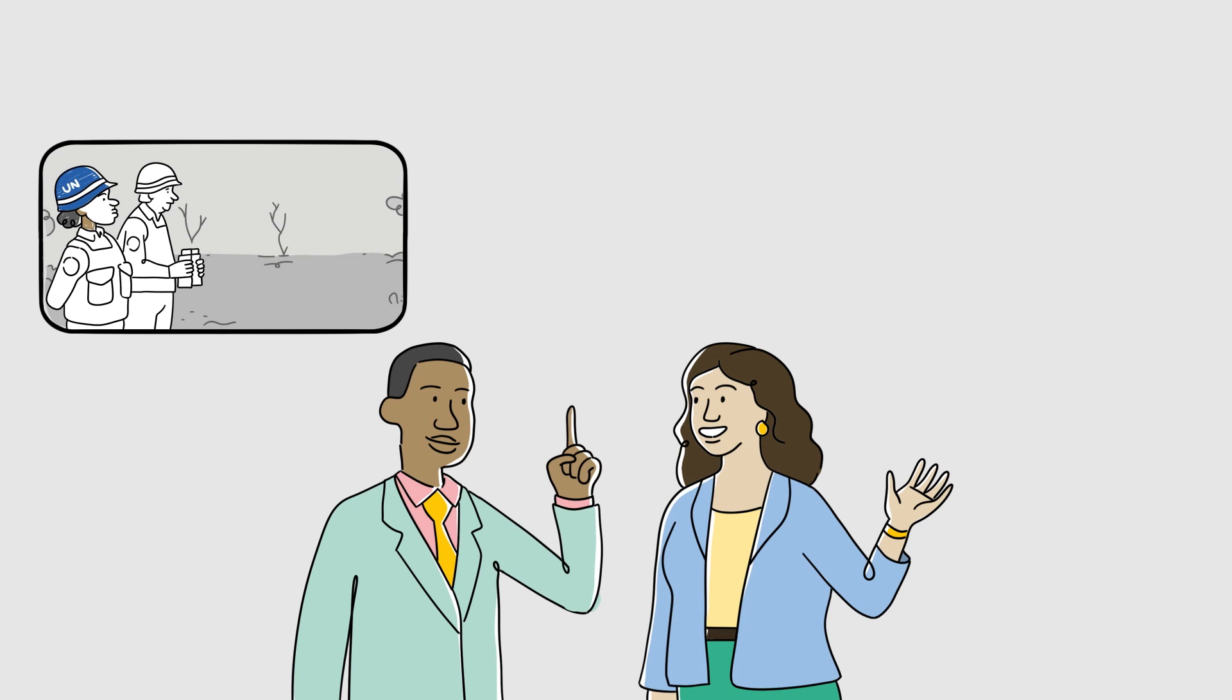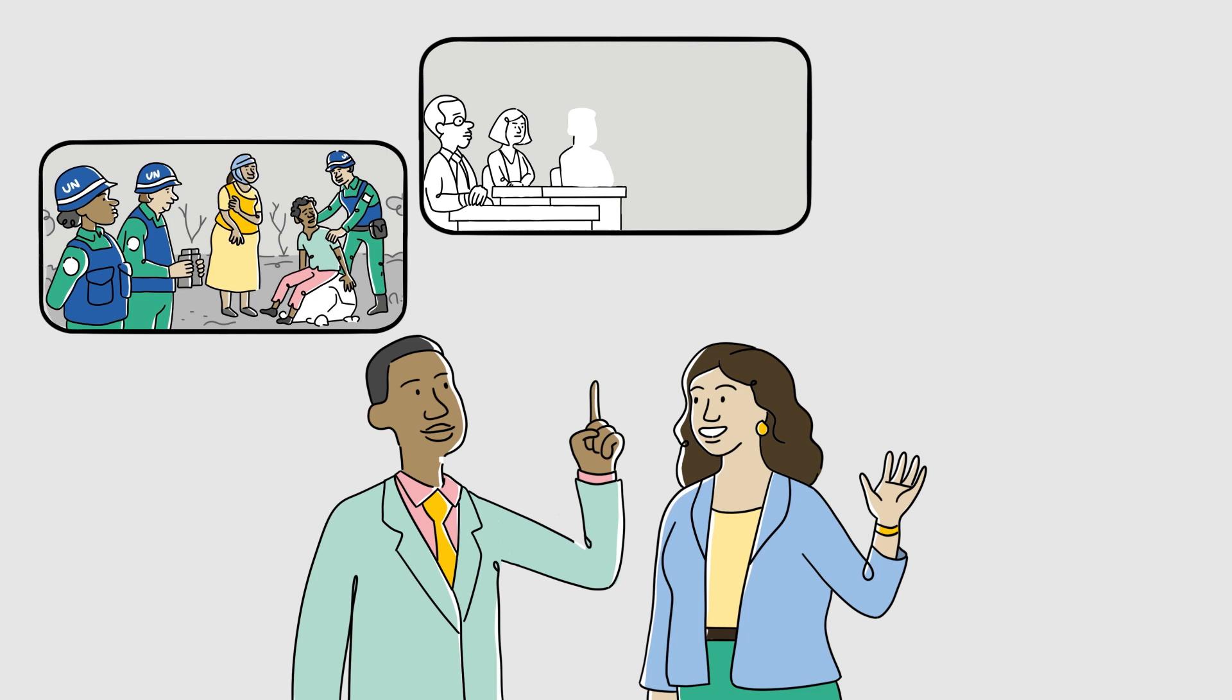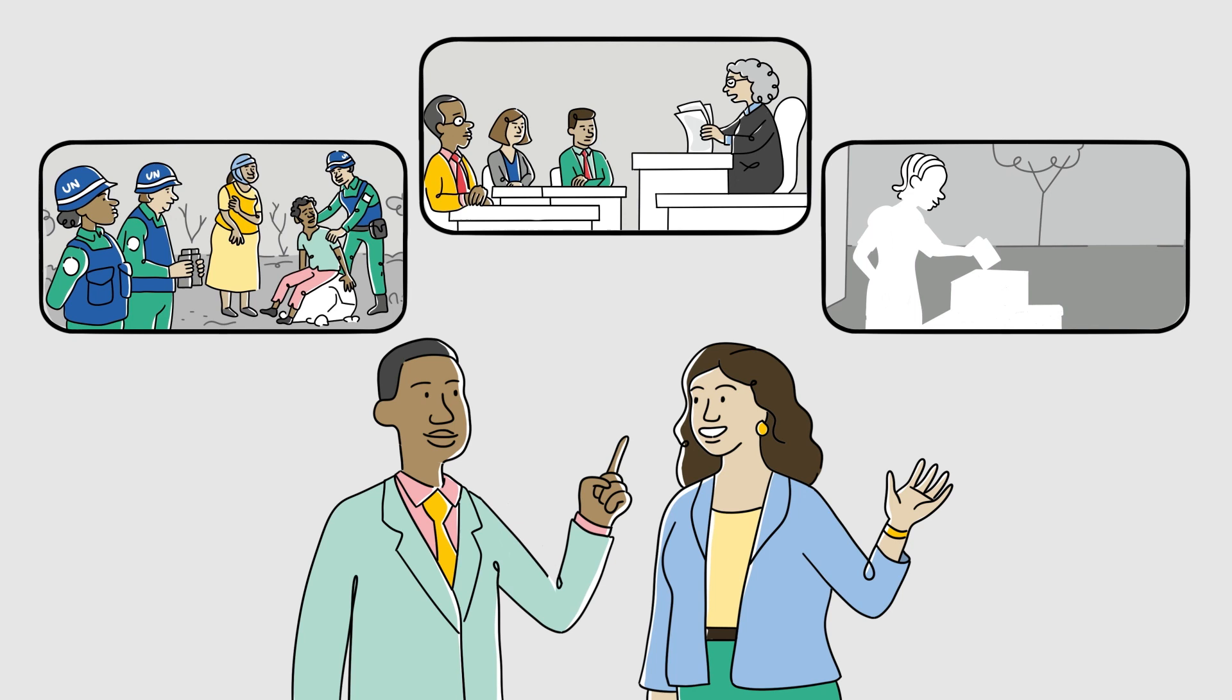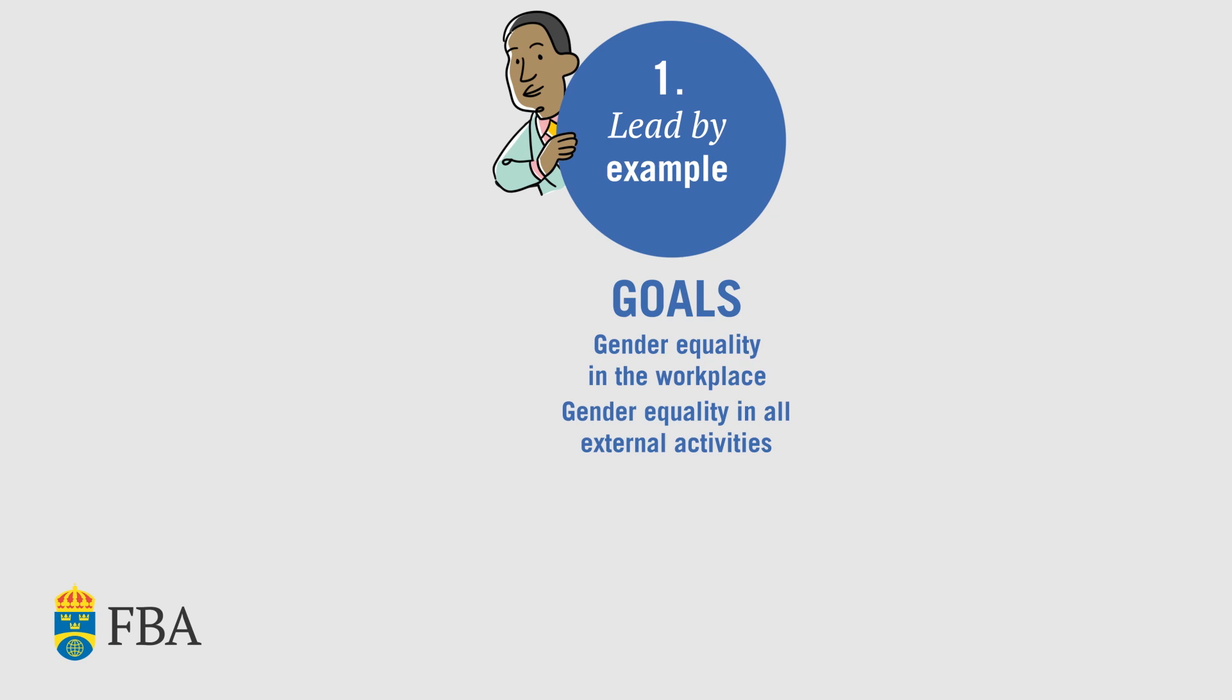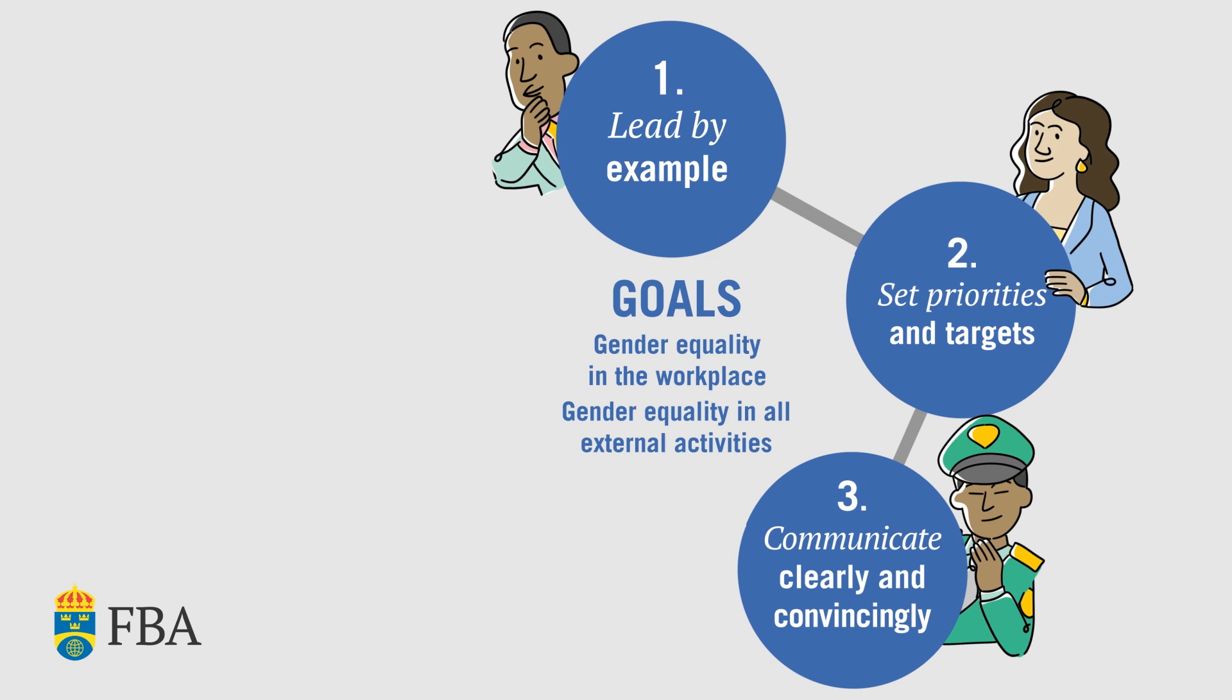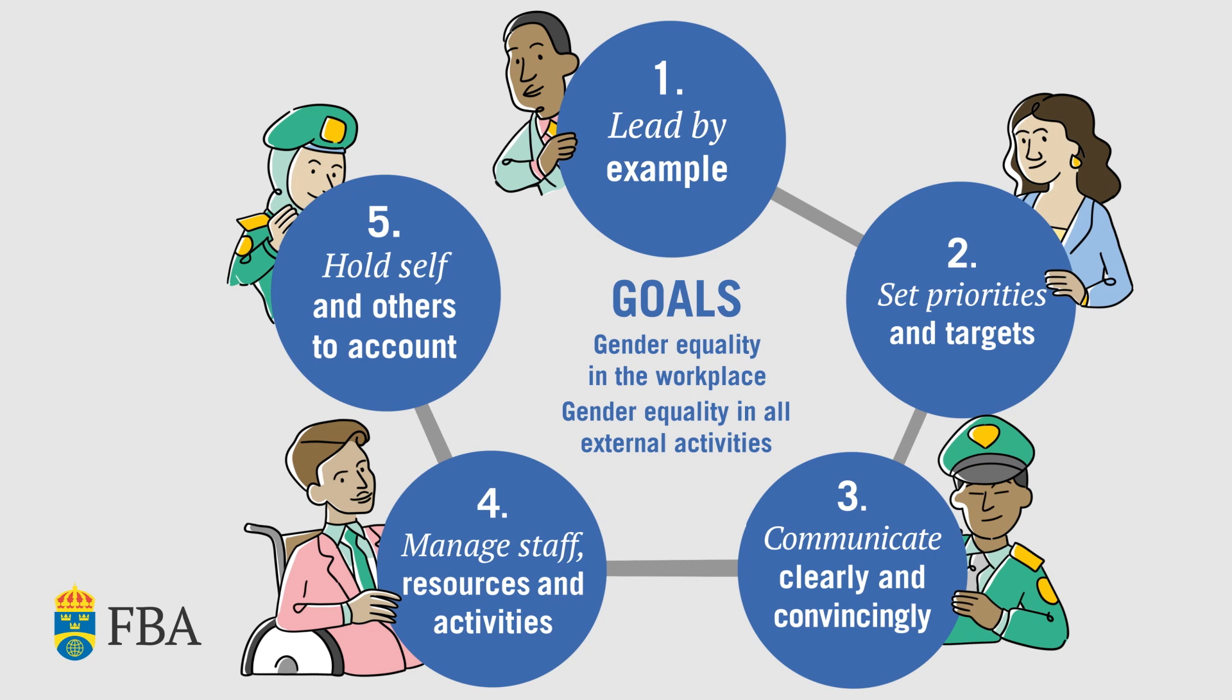A gender responsive leader doesn't need to become a gender equality expert, but we are expected to actively use our executive position, leadership and management skills to promote gender equality in our workplace and in our peace, security and development work. Therefore, the Folk Bernadotte Academy, the Swedish Government Agency for Peace, Security and Development, has designed a gender responsive leadership framework that focuses on five key leadership skills that we can and should be taking to drive gender equality forward. Let's have a quick look at each skill.